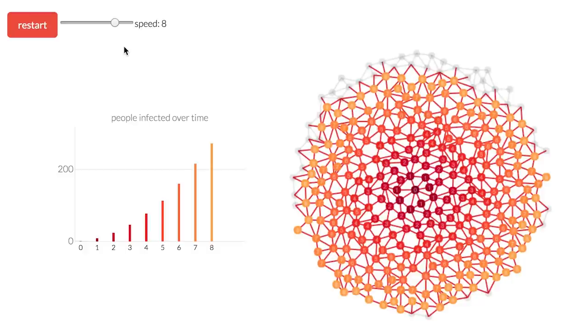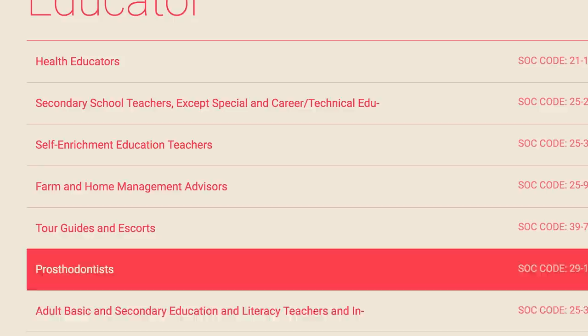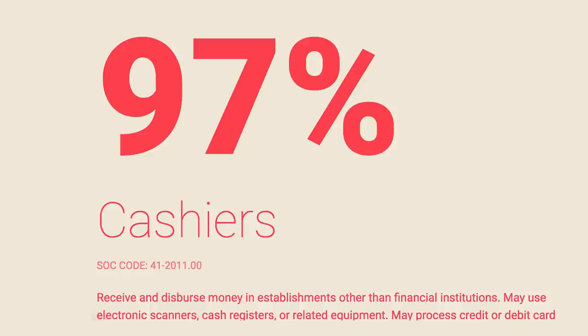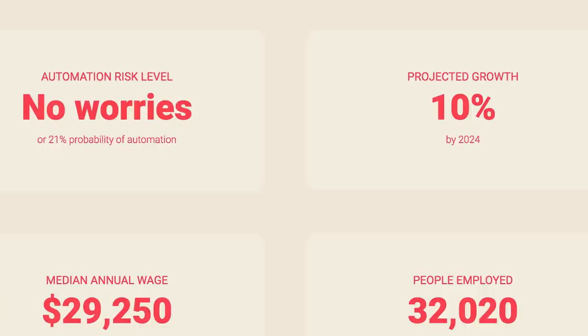Which means robots would have to take over — so find out if that's possible on Will Robots Take My Job. Type in your current job, or really any job, to see the chances of that job being lost to robots. According to the site, if you're a veterinarian you only have about a 3.8% chance, but cashiers have a 97% chance. Scroll down to see automation risk level, median salary, and people employed.